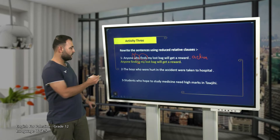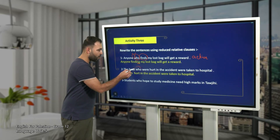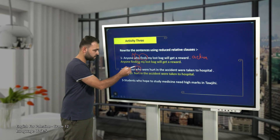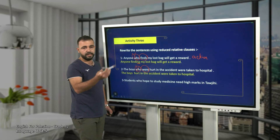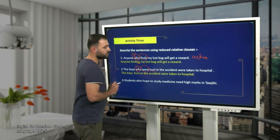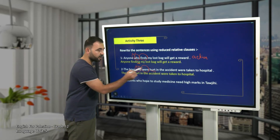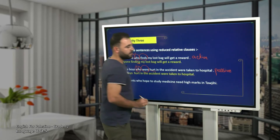Number two: 'The boys who were hurt in the accident were taken to hospital.' We delete the relative pronoun and the helping verb — 'were' or any auxiliary between the relative pronoun and the main verb — it is deleted. We use the past participle form of the verb 'hurt.' Why? Because it is a passive relative clause.